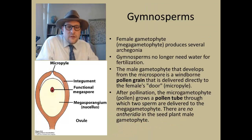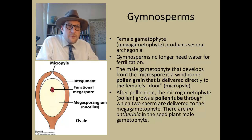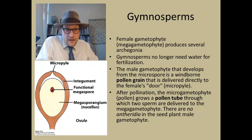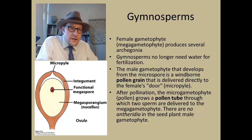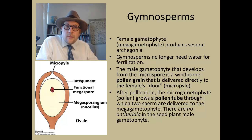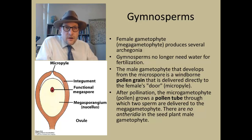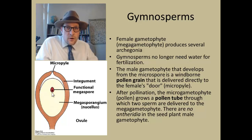Gymnosperms, the naked seed plants, are characterized by having female gametophytes with the megagametophyte generation retained on the plant, where it produces an archegonium with an egg cell from a functional megaspore. Gymnosperms no longer need water for fertilization, which makes them different than ferns. Male gametophytes, or pollen, develop from microspores, which are windblown and fall onto the female's micropyle into the ovule.